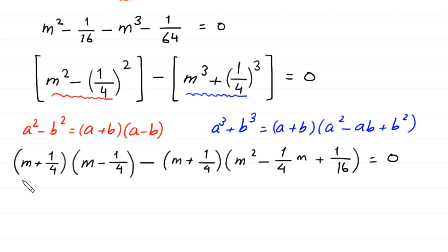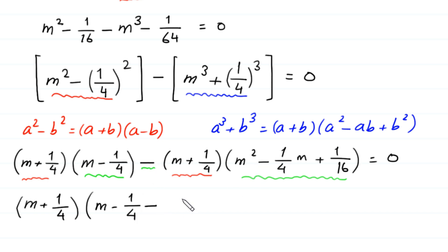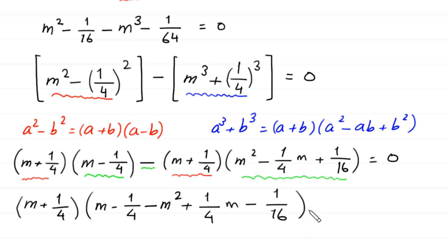Now, as you can see in the whole expression, m plus 1 over 4 is a common factor. So we factor out m plus 1 over 4. In the bracket: m minus 1 over 4, minus this expression m squared minus 1 over 4 m plus 1 over 16. Due to this minus, this negative 1 over 4 m becomes plus 1 over 4 m, and this plus 1 over 16 becomes negative 1 over 16, is equal to 0.